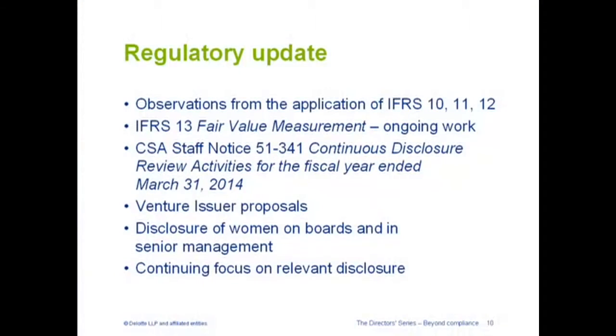The next topic is CSA Staff Notice 51-341, which reports the results of all continuous disclosure reviews across the country. It discusses common deficiencies in financial statements and MD&A, and provides helpful guidance, suggestions, and examples. I'd urge you to have a look at that notice. There's a good example on revenue recognition: it talks about a generic revenue recognition policy and the fact that it could trigger a question from the regulator if it's not tailored specifically to your situation, so that an investor can understand how revenue is being recognized. Revenue is obviously very important.